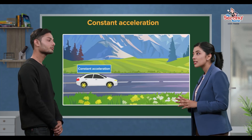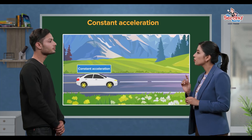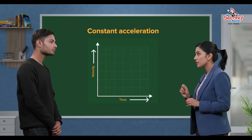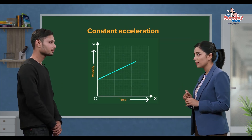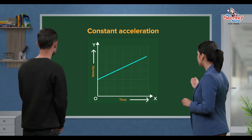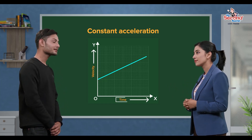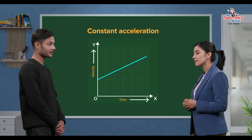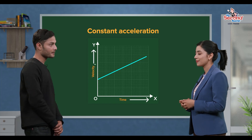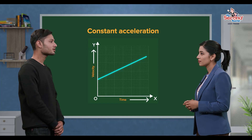If we consider an object with constant acceleration, the velocity-time graph has the same time axis and the same velocity axis. The graph is a straight line.